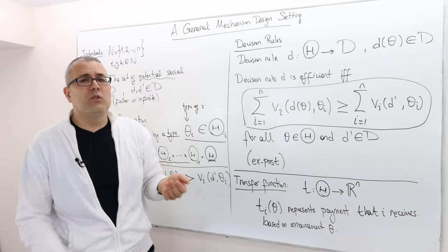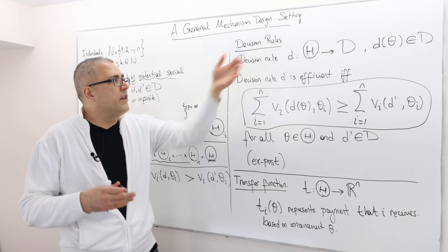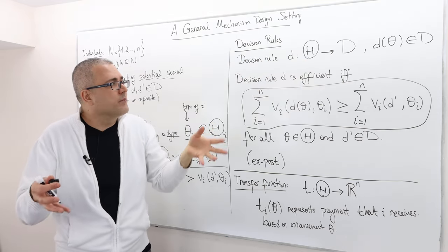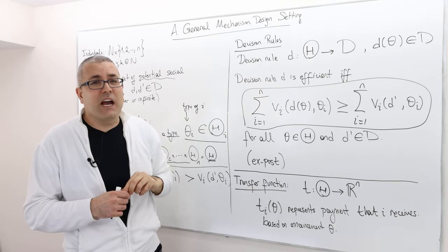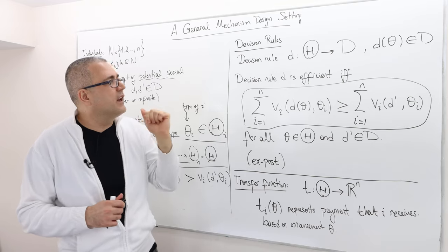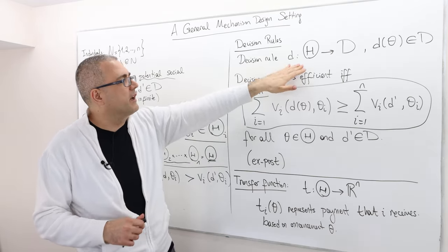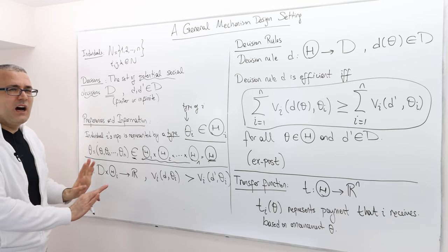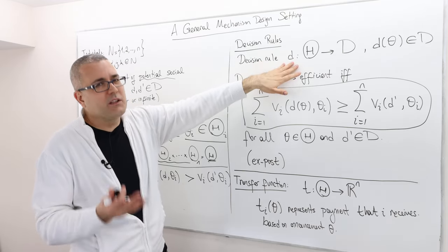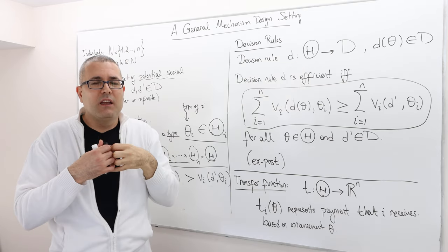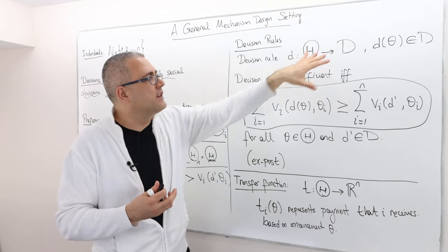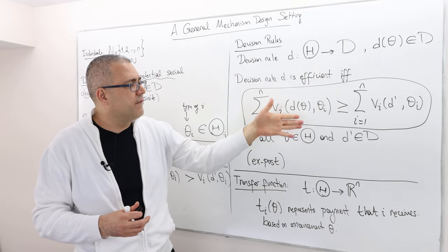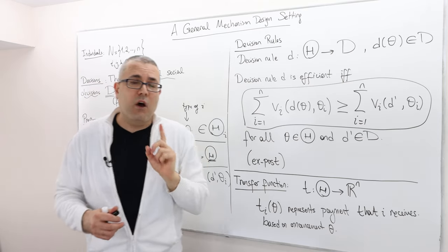The decision rule is an auction — whether it's a first price, second price, or third price auction. An auction looks at the declared types. The first price auction is not a direct mechanism in the sense that it looks at bids rather than types. This is more like a second price auction, because the second price auction looks at the declared valuations and then outputs who wins and who loses. An auction rule is efficient in the same sense as before.